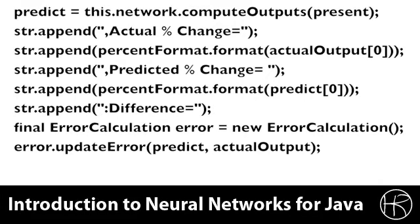We assign this prediction into the predictor array as returned from the compute outputs function of the neural network. We then display the actual and the predicted values. These are the percentage changes.